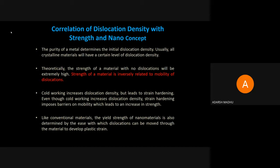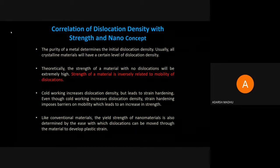Cold working or annealing can increase dislocation density, and that leads to strain hardening. Strain hardening is a process by which the mobility of dislocations is reduced, restricting their movement. To increase the strength of a material, you can use the process called strain hardening.